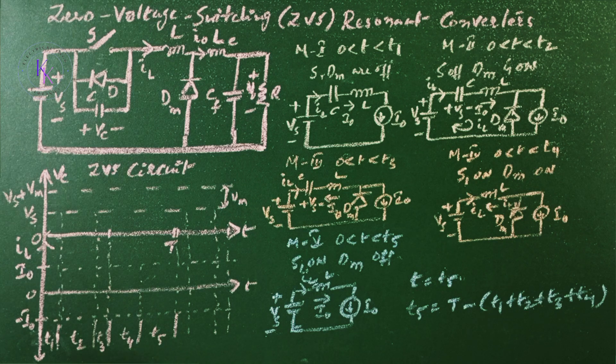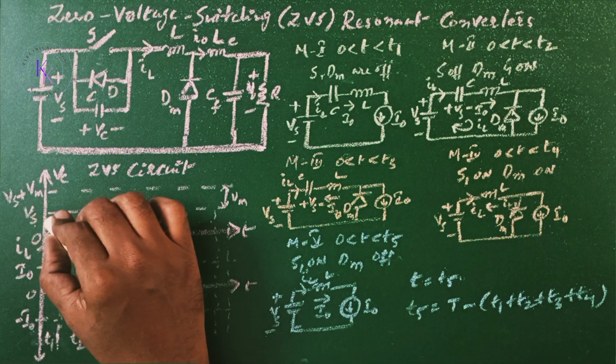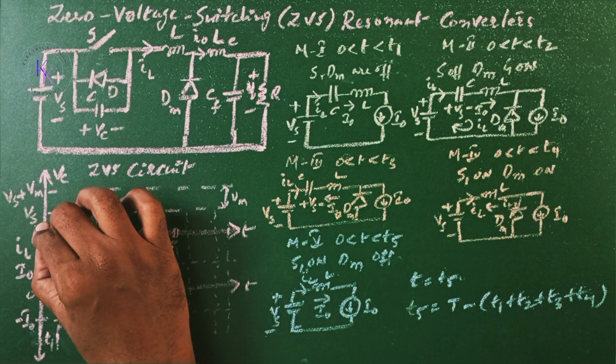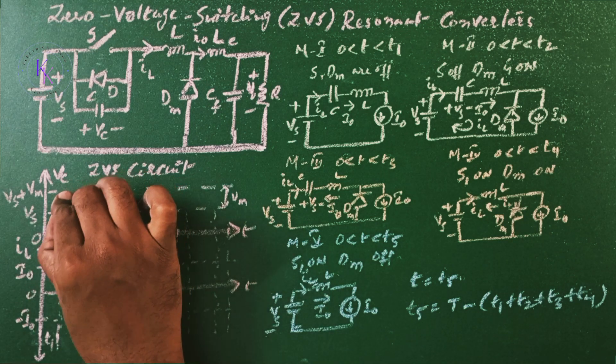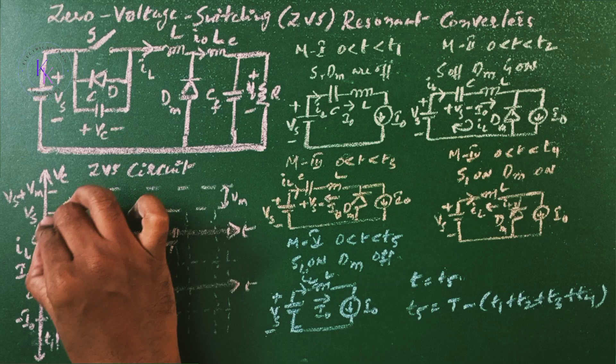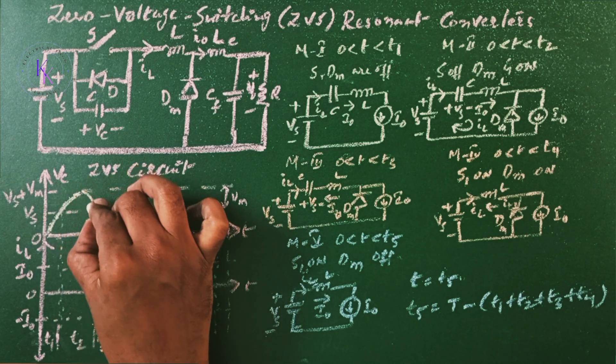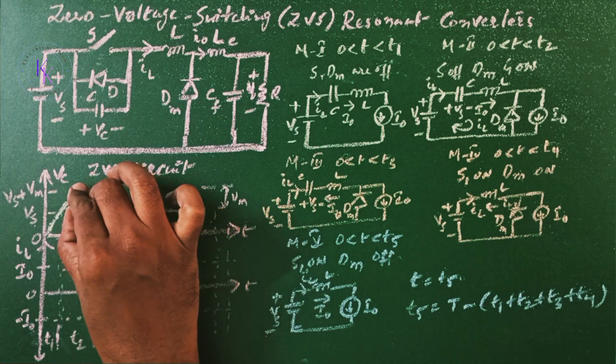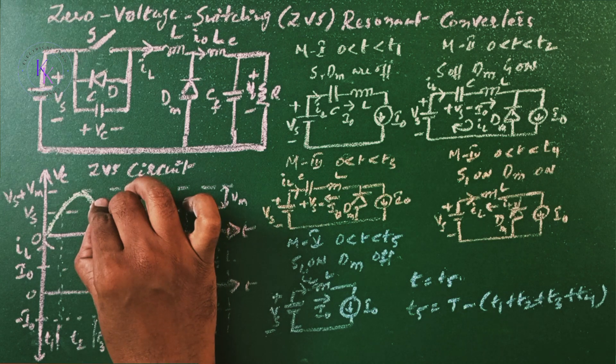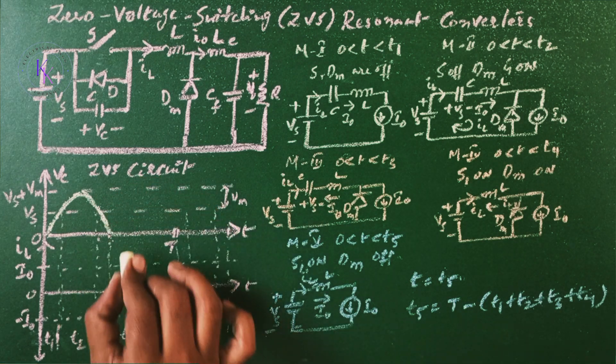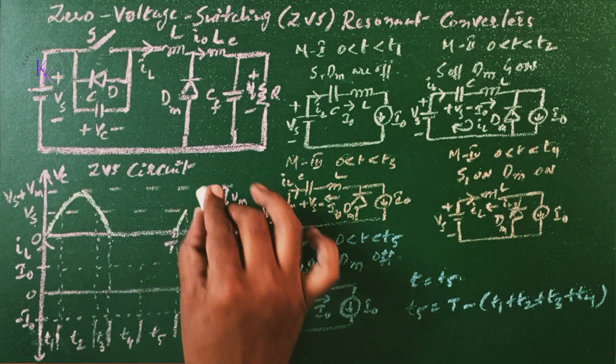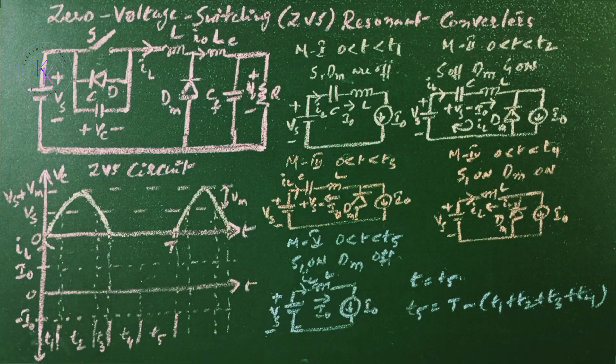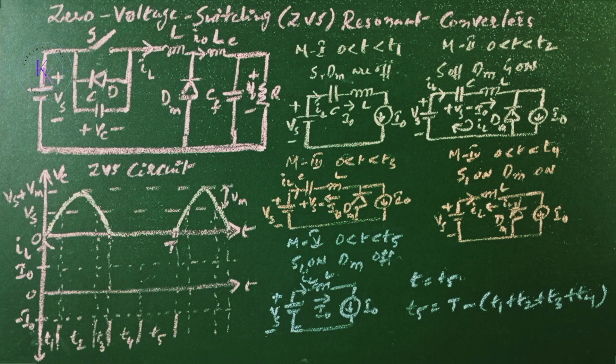Now let us see the waveforms. The voltage of the capacitor in Mode 1 is going to reach from zero to VS. In Mode 2 it reaches the maximum value of VS plus Vm and then turns back to VS. In Mode 3, the VC will become zero and stays at zero in Mode 4 and Mode 5 until the next cycle starts, then it's going to repeat.